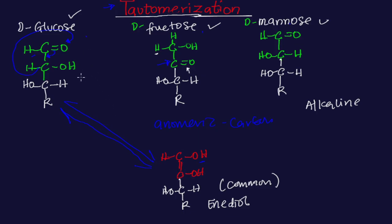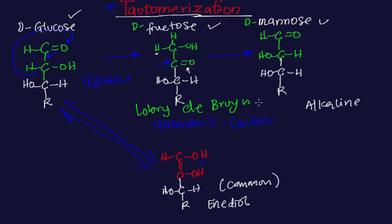Whenever glucose is kept in an alkaline solution, the first thing that is going to happen is that it will undergo isomerization to form D-fructose, and then it will form D-mannose. Whenever glucose is kept in an alkaline solution it forms fructose first, and after forming fructose it forms mannose. In that scenario, whereby glucose is kept in an alkaline solution and forms D-fructose and D-mannose, we call this the Lobry de Bruyn–van Ekenstein reaction, or Ekenstein transformation.